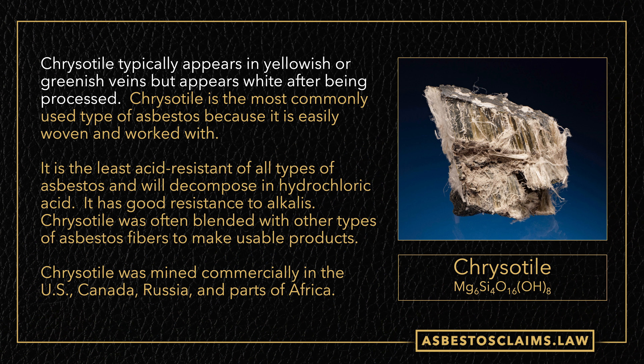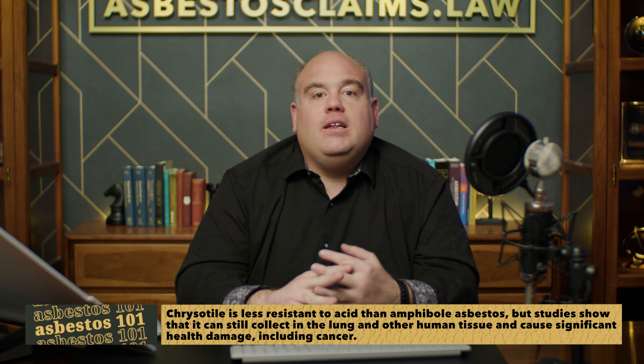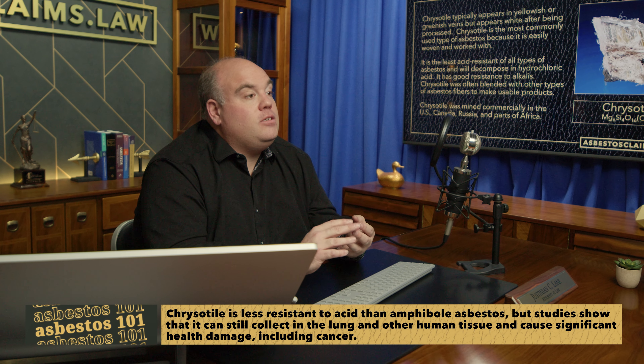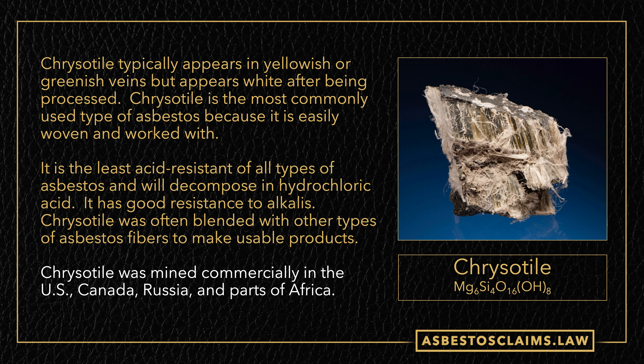Now we've kind of seen what asbestos looks like. We can take a closer look at the individual minerals that make up the asbestos family. We'll start with chrysotile, which is often referred to as white asbestos, because when you process it, it almost always looks white. Chrysotile was the least acid-resistant type of asbestos, but because its fibers were the longest and easiest to weave, it was the most commonly used type. There were commercial asbestos mines in the U.S. — California, Vermont, Arizona. The largest asbestos mine in the world at one point was the Jeffrey mine in a town called Asbestos, in Quebec.